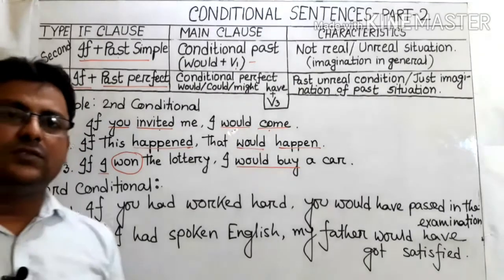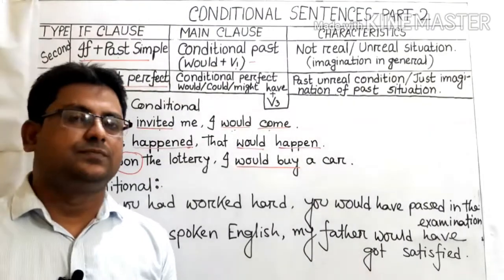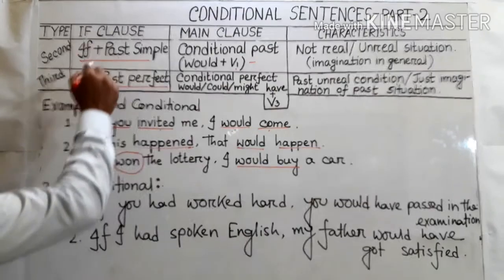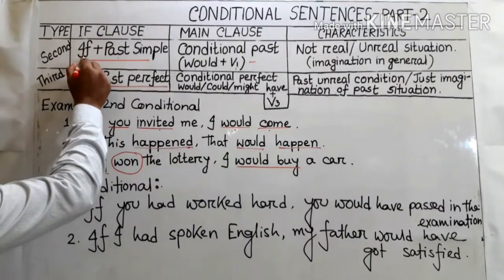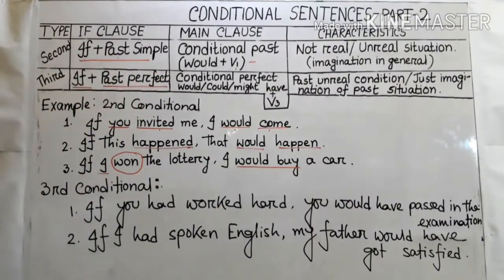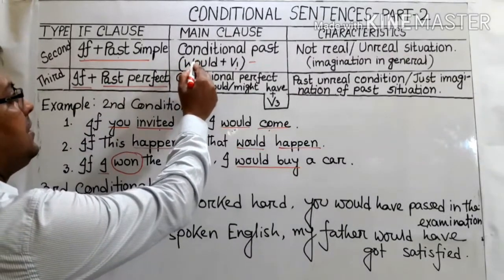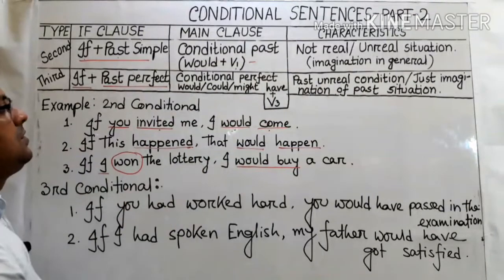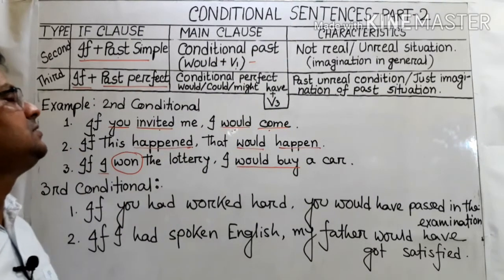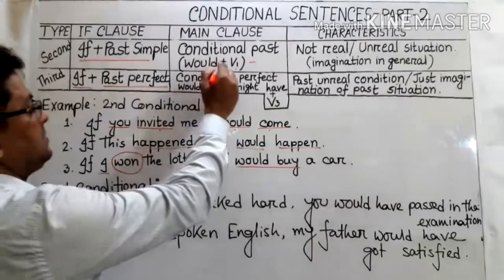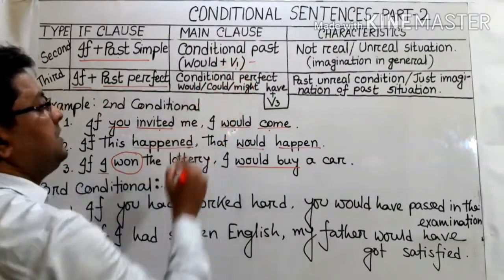First we will learn about the second conditional. In the second conditional, the if-clause contains 'if' plus past simple, and the main clause contains the conditional past — that means after the subject we will use 'would' plus the base form of the verb.